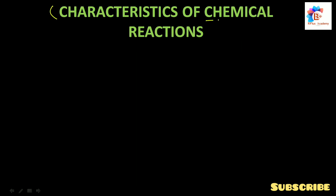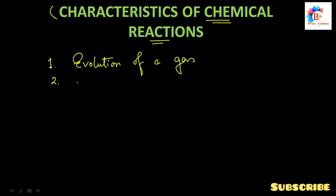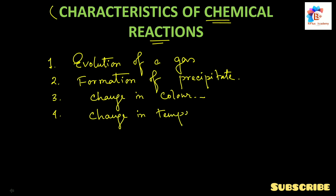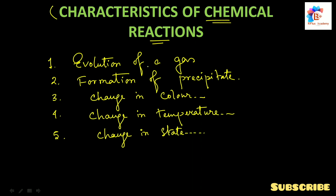Now we will learn about the characteristics of chemical reactions. The characteristics are: first, the evolution of a gas; second, formation of a precipitate; third, a change in color; fourth, a change in temperature; and fifth, change in state.